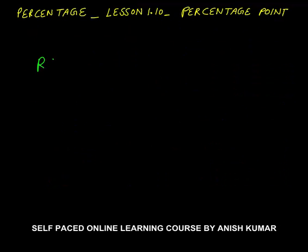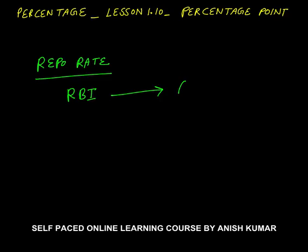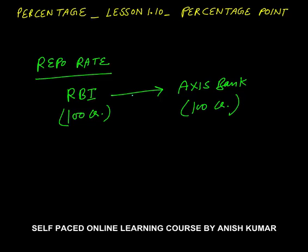Another practical example: repo rate. What is this repo rate? Repo rate is the rate at which the central bank — let's say in India, Reserve Bank of India — gives loan to commercial banks. Let's say Axis Bank. If RBI gives 100 crores of rupees to Axis Bank, the interest rate that RBI will charge from Axis Bank is called the repo rate. And this is, for example, 6.25% per annum as of 1st April 2016.